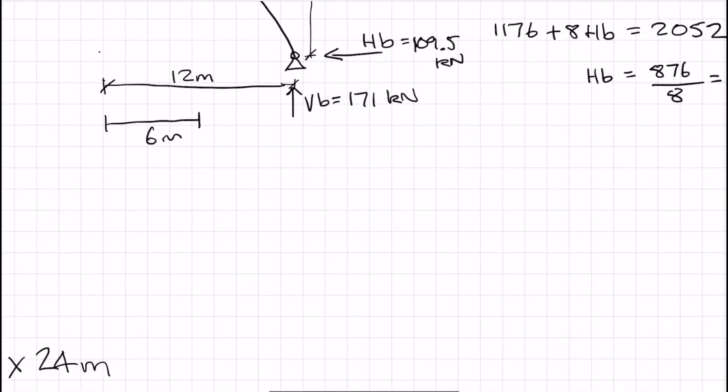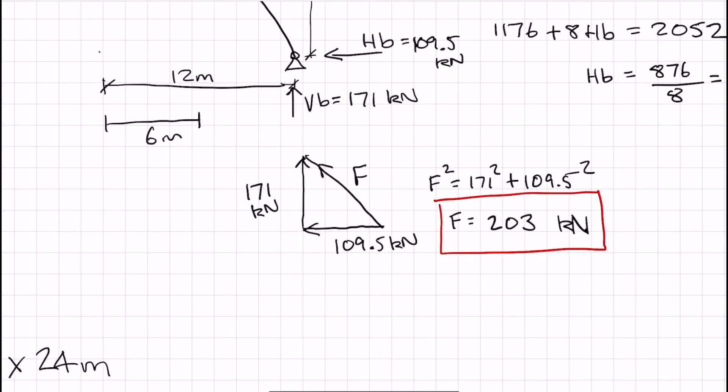So that means now it's quite easy from here on. If we draw a triangle of forces, so our vertical component is 171 kilonewtons. Our horizontal is 109.5 kilonewtons. So it's Pythagoras from here on out. So let's just call that F. So F squared is equal to 171 squared plus 109.5 squared. So F is equal to 203 kilonewtons. And that is our final answer.